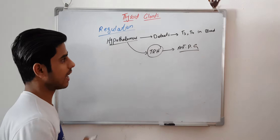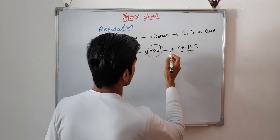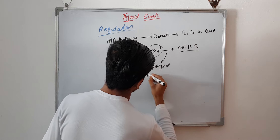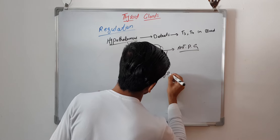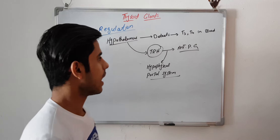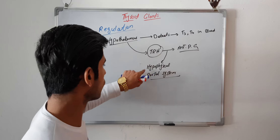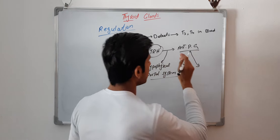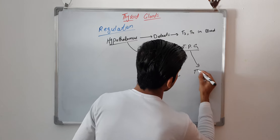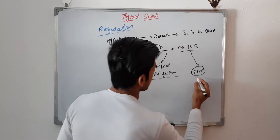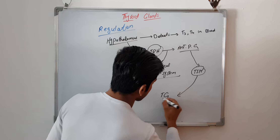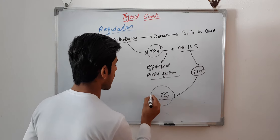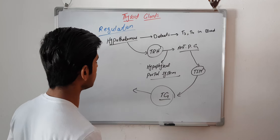This thyroid releasing hormone acts on the anterior pituitary gland. The hypothalamus is connected to the anterior pituitary gland with the help of the hypophysial portal system. The hypothalamus secretes the thyroid releasing hormone, which travels through the hypophysial portal system to stimulate the anterior pituitary gland to secrete thyroid stimulating hormone. This TSH then goes towards the thyroid gland, and the thyroid gland produces T3 and T4 hormones.